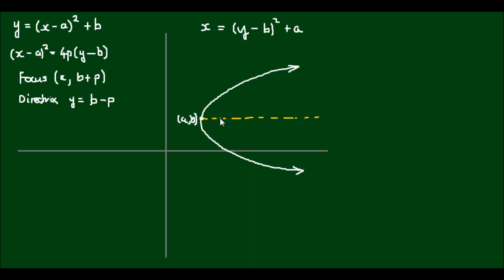So I can still have a focus point at a horizontal distance of p away from the vertex. And let me draw this (a, b) point in a more appropriate spot. So that's the vertex (a, b).